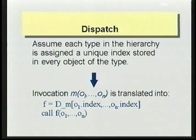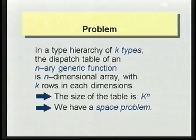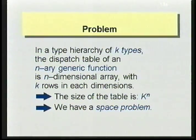Where is the problem? In a type hierarchy of K types, the dispatch table of an N-ary generic function is an N-dimensional array with K rows in each dimension. So the size of the table is K to the power of N. This means we have a space problem because K is usually several hundred types and N varies between 2 and 4.